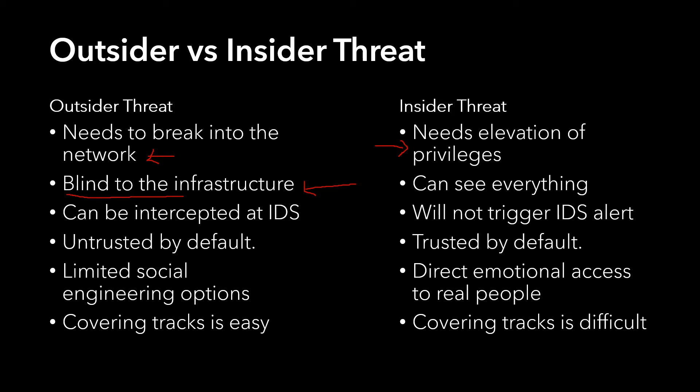However, the insider threat is someone who is inside the organization, so they can see everything — they can visually confirm what they are seeing. Another very important point is that outsider threats, as shown in the diagram, can be intercepted at the intrusion detection level, but since insiders never cross the network boundary outward, they will not trigger IDS alerts. So basically, they are invisible.